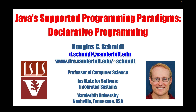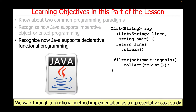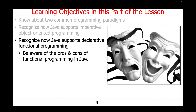Now that we've talked about Java's support for imperative programming with its classic object-oriented programming features, let's turn our attention to declarative programming. We'll walk through a method implementation as a representative case study, this time demonstrating a functional programming approach. In addition, we'll also talk about the pros and cons of applying functional programming in Java.